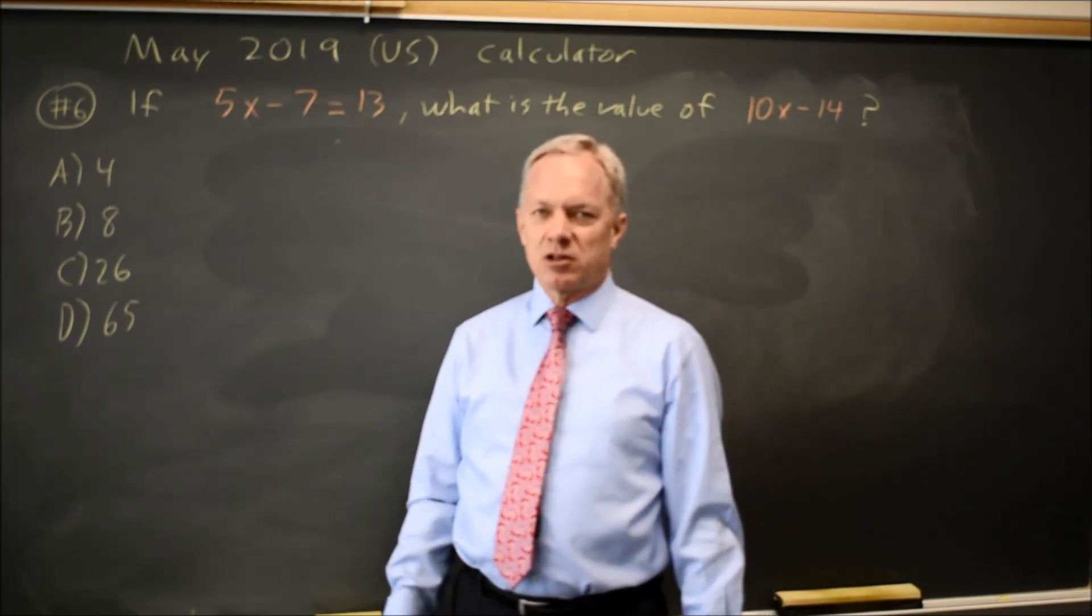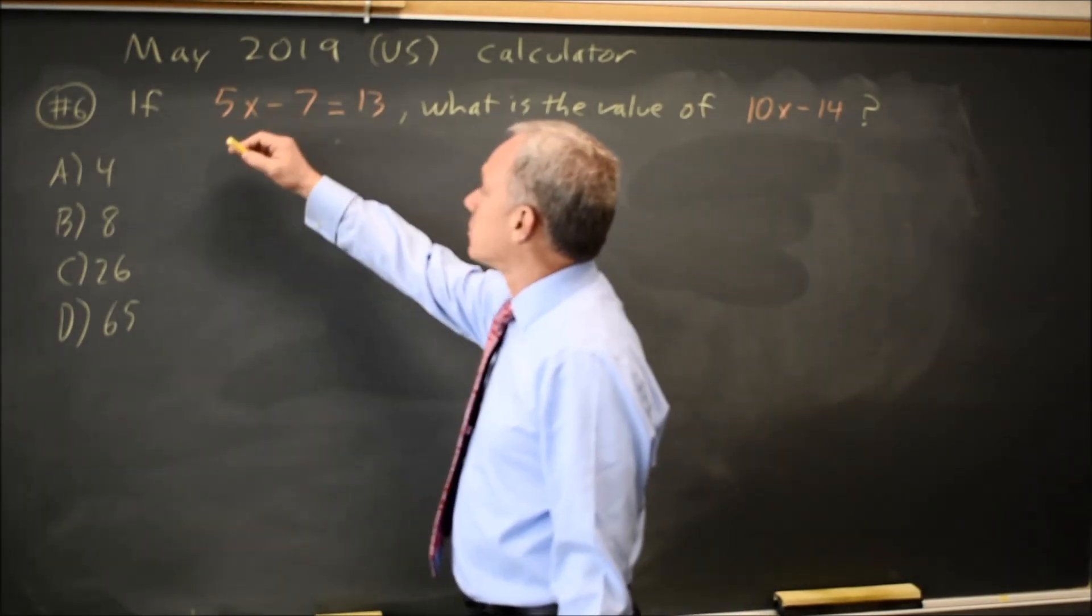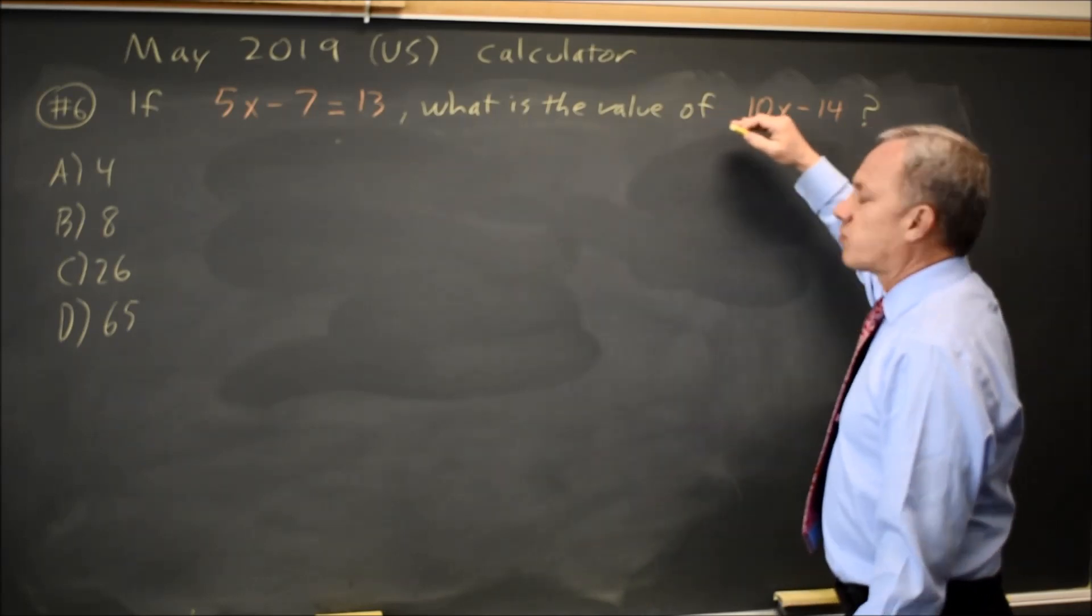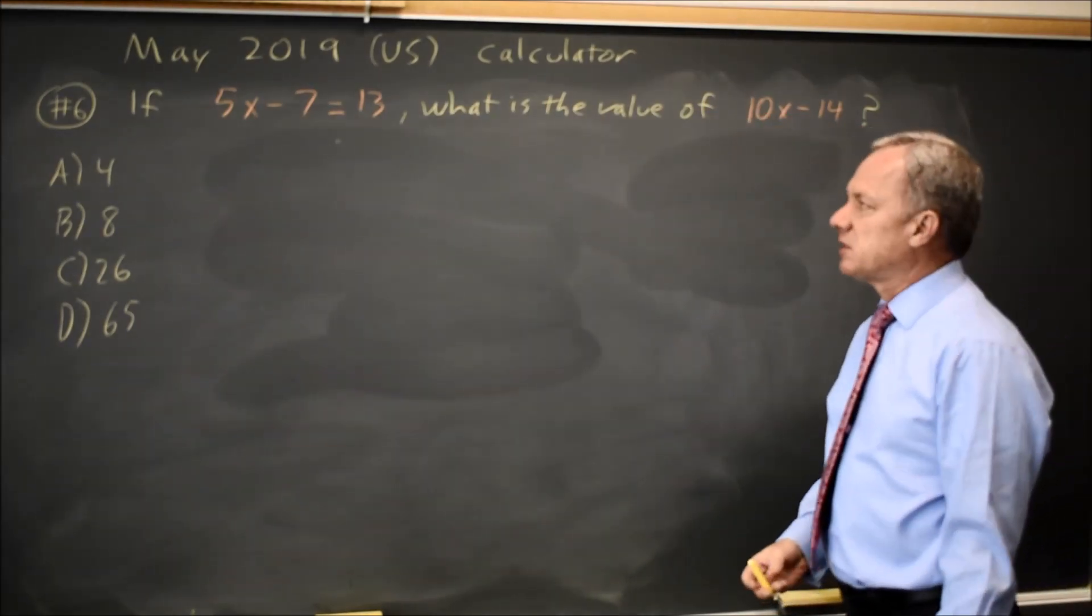This is calculator question number six. College Board gives us a simple linear equation and asks us for the value of a linear expression. There's two ways of doing this.